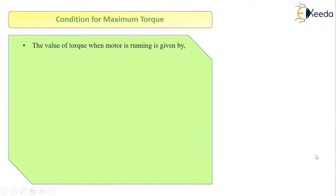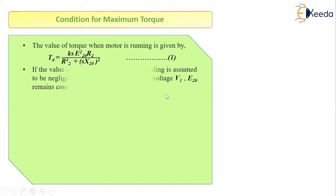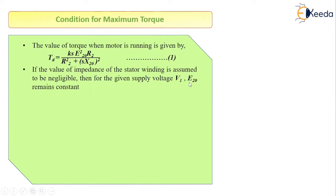First, let us see the condition for maximum torque. As already seen in the previous video, the value of torque when the motor is at running condition is given by: TD = Ks·E20²·R2 divided by (R2² + (S·X20)²). Now if we assume that the impedance of the stator is negligible, then for a particular supply voltage V1, E20 — the EMF induced in the rotor — remains constant.